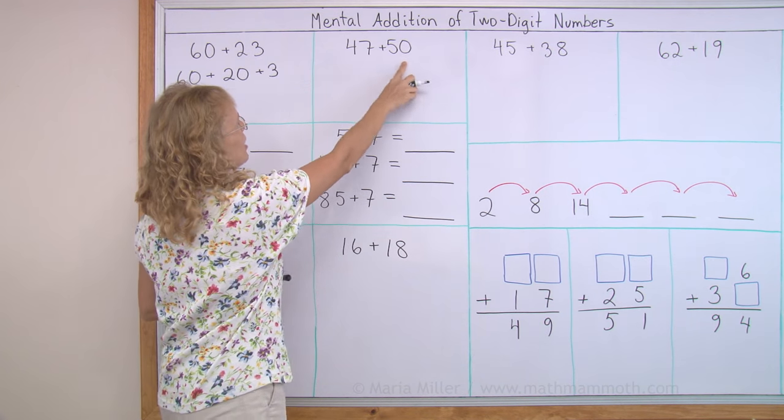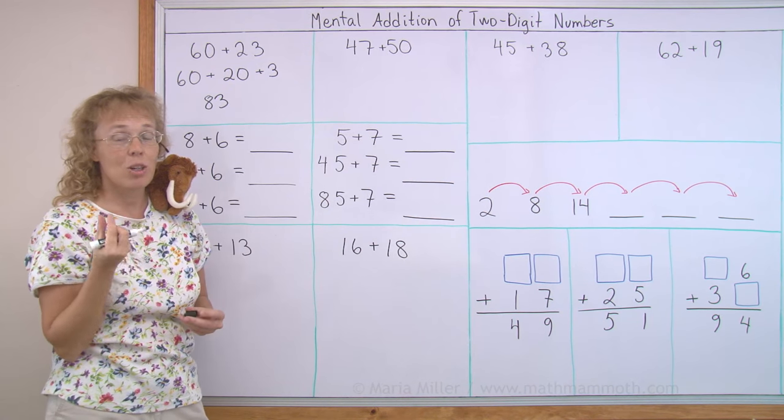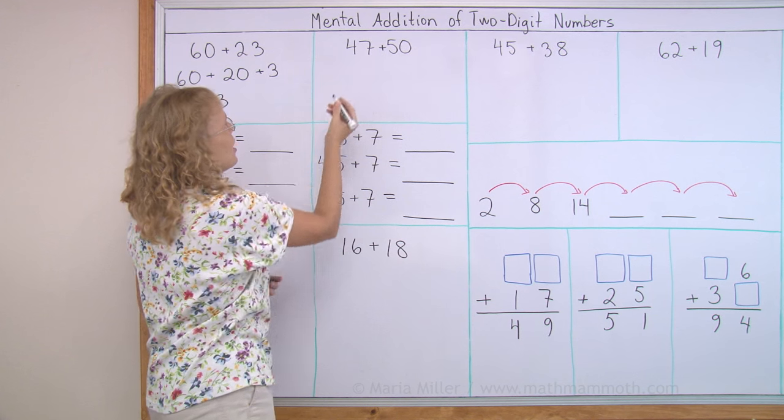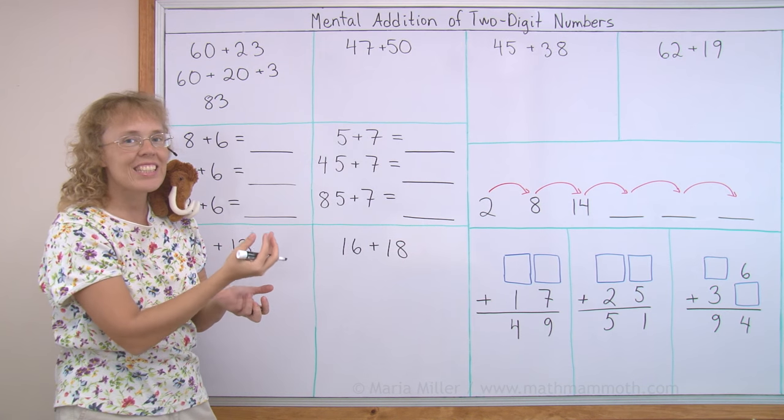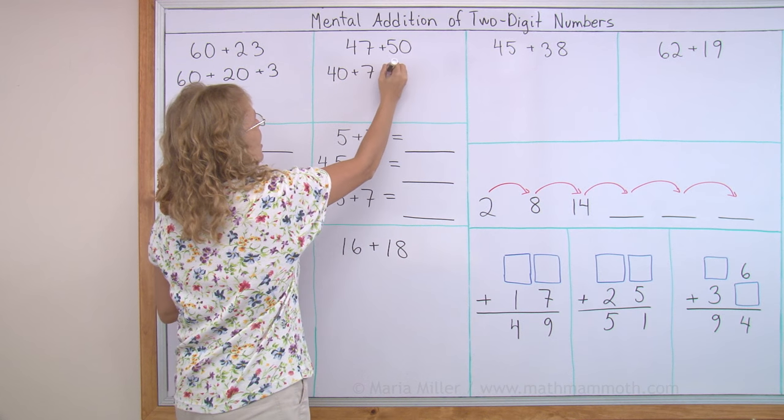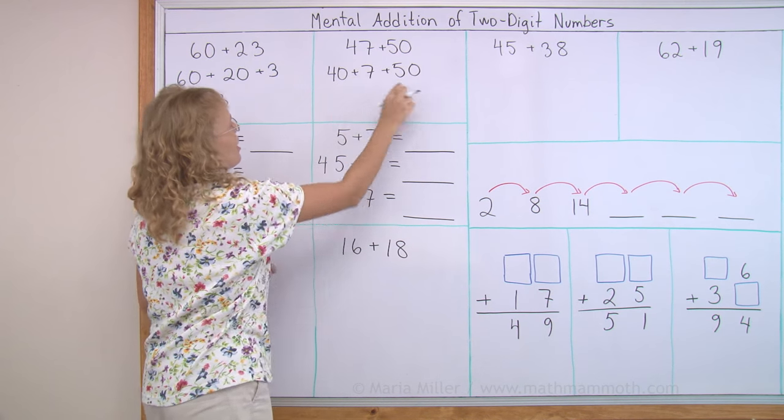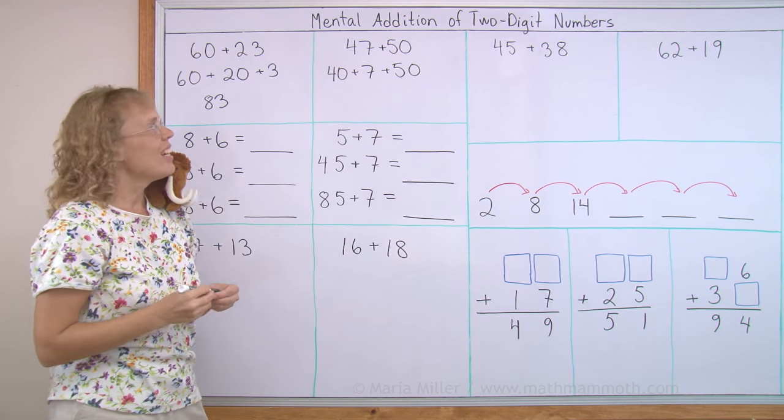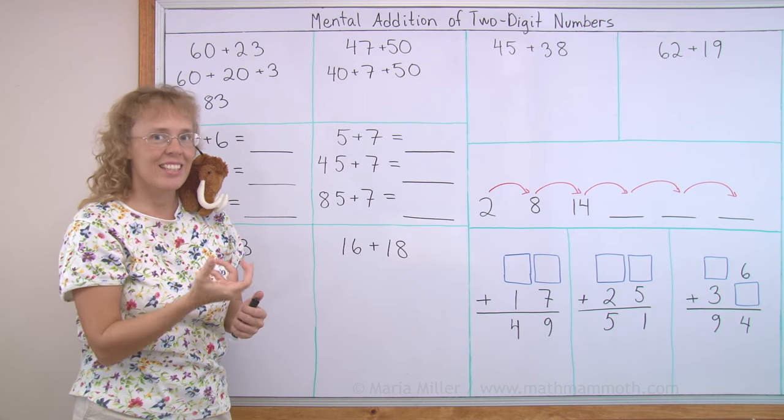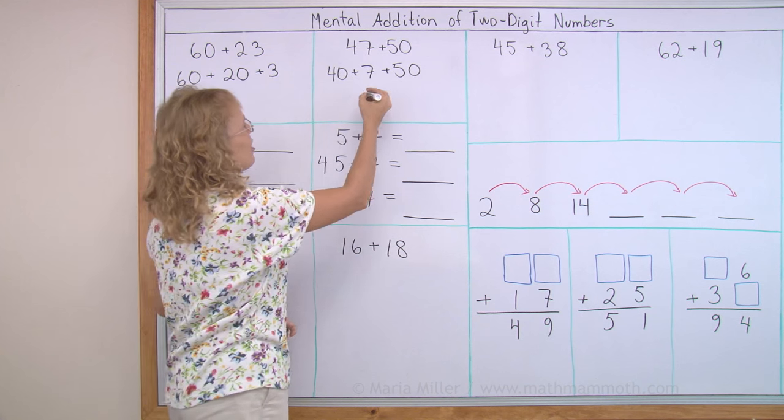Again, 47 plus 50. 50 is just whole tens, 5 tens. So break this number into two parts, 40 and 7. In other words, I write it here, but you don't write it when you're actually doing this mentally. You don't write this step, of course, you just think it. So we have 40 and 50, which we add first, and we get 90, and then we have the 7. So the answer is 97.